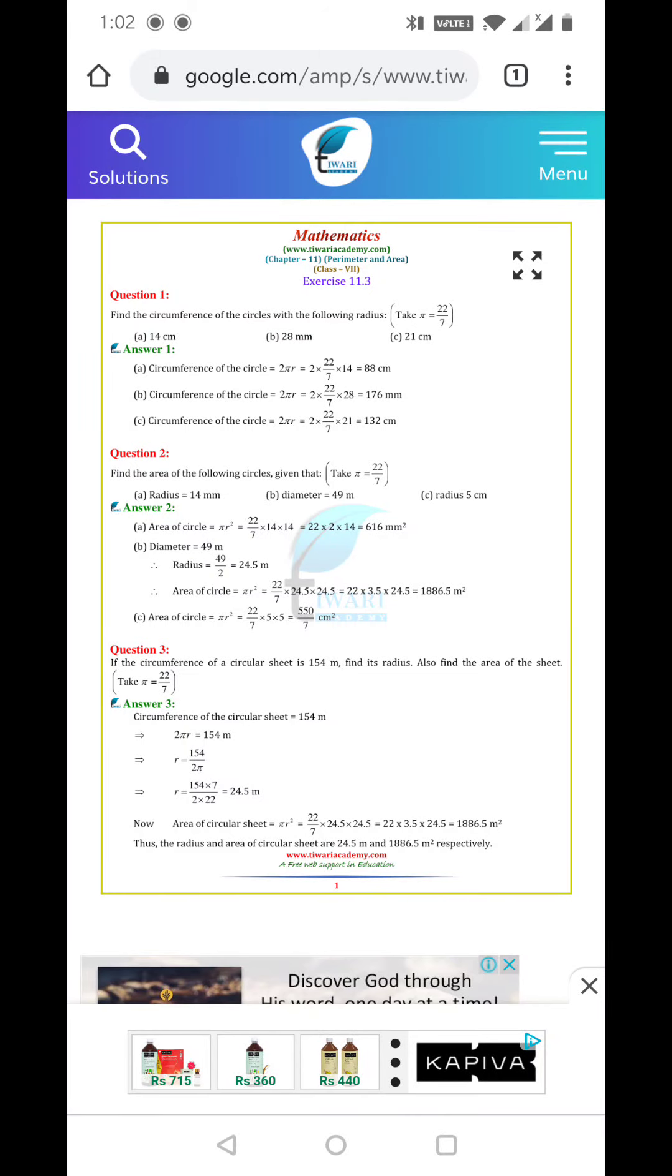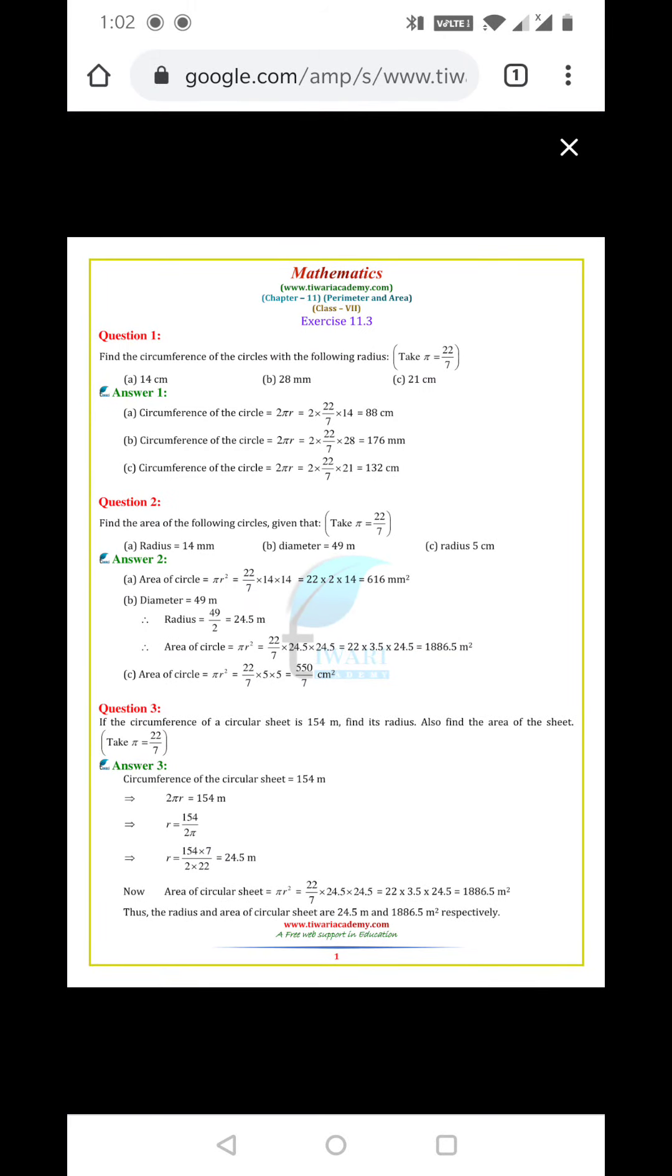Good afternoon students. Now we are going to class 7th exercise 11.3, perimeter and area. First, find the circumference of circles with the following radius.